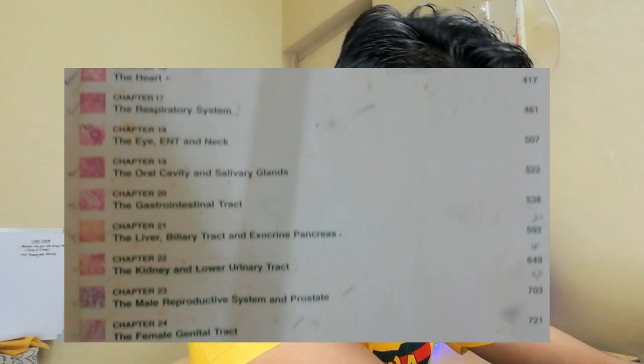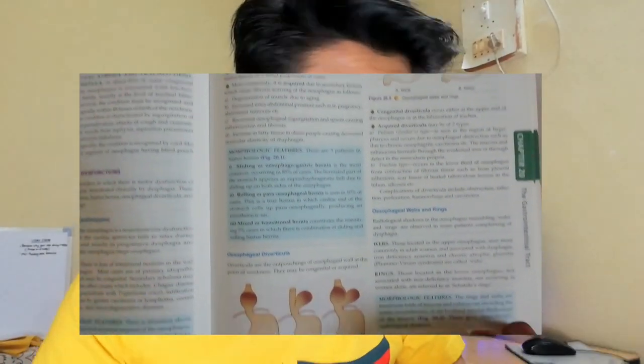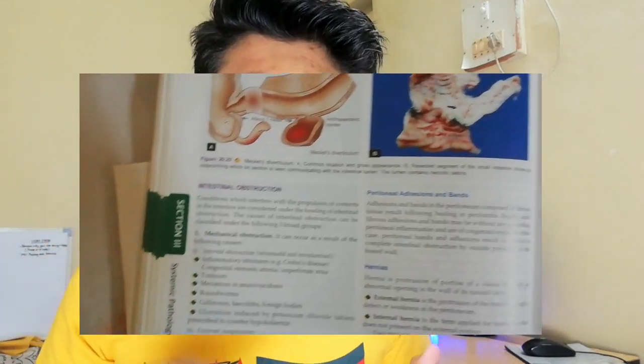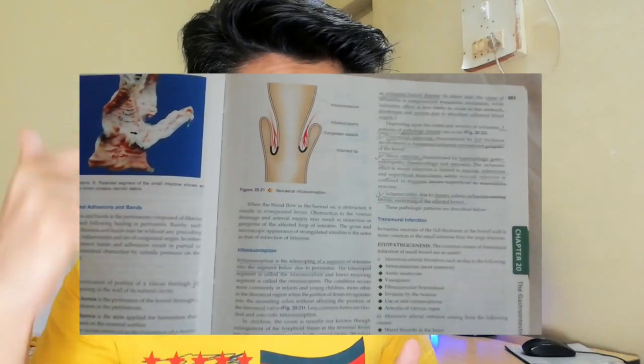The very first hack you can use while reading any book or topic in medicine is to start with the classification of the whole topic. For example, right now I am reading GIT pathology. What I do is go through each and every classification given in that pathology chapter. The books are already divided into various topics, so I go through each classification of that chapter and then prepare a flowchart.